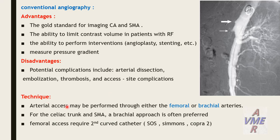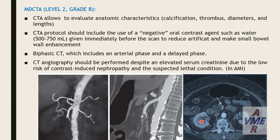Regarding technique, arterial access may be performed through either femoral or brachial arteries. For the celiac trunk and superior mesenteric artery, the brachial approach is often preferred. Femoral access requires shaped catheters such as SOS, Simons, and Cobra II. Multi-detector CT angiography allows evaluation of anatomical characteristics like calcification, thrombosis, diameter, and length.